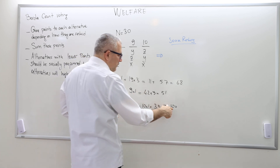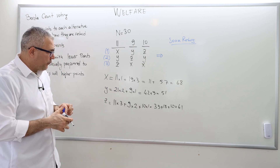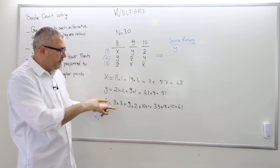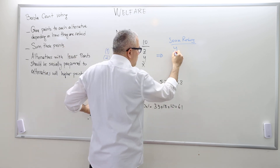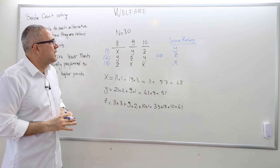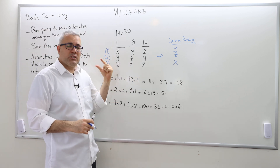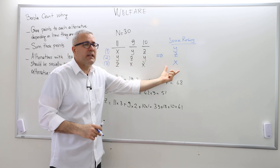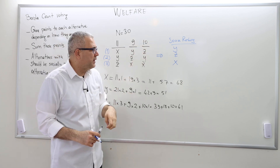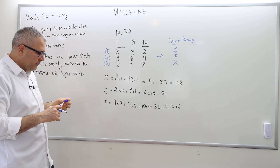In total for Z: 33 plus 18 plus 10, which is 61. The alternative with the lowest score is ranked first — that's Y with 51. Then Z with 61, and X with 68 is ranked last. So according to Borda count voting, the social preference is Y, then Z, then X as the socially least preferred alternative.